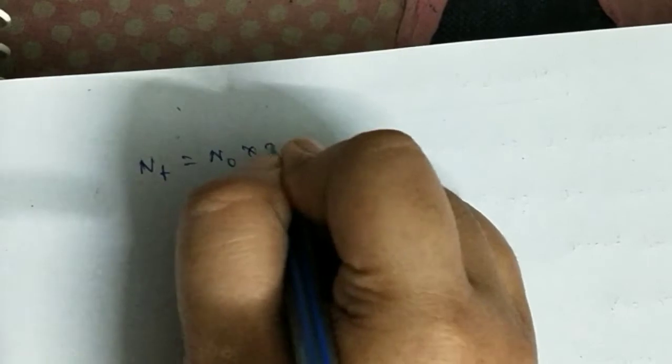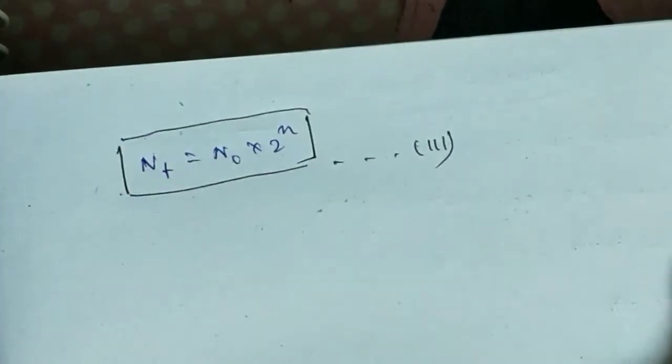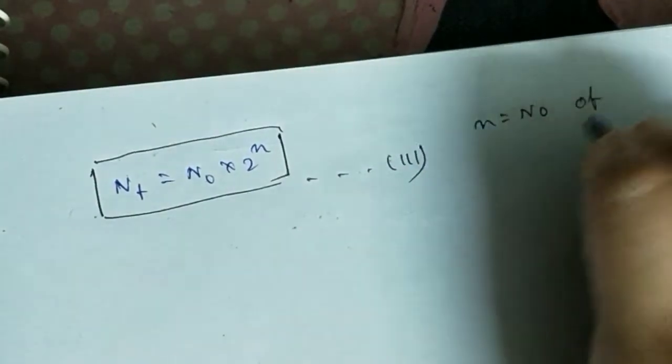Since bacteria divide by binary fission — one cell becomes two, two become four, four become eight, and so on — the cell count multiplies at a power of two. This can be generalized by the equation Nt = N0 × 2^n, where n is the number of generations. This is our third formula and an important one.